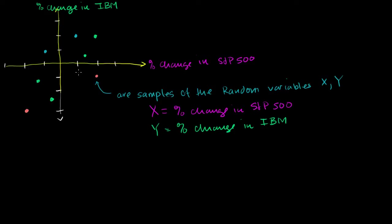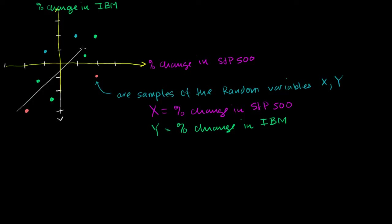Let me define what X and Y are: X is equal to the percent change in the S&P 500, and Y is equal to the percent change in the share price of IBM. This is just a sample. If we wanted to do a regression line, we find the sample mean of both variables based on these N samples, and we'd come up with a regression line that has some slope and some Y-intercept. Let me draw a regression line here — maybe it looks something like this, with a noticeable Y-intercept.